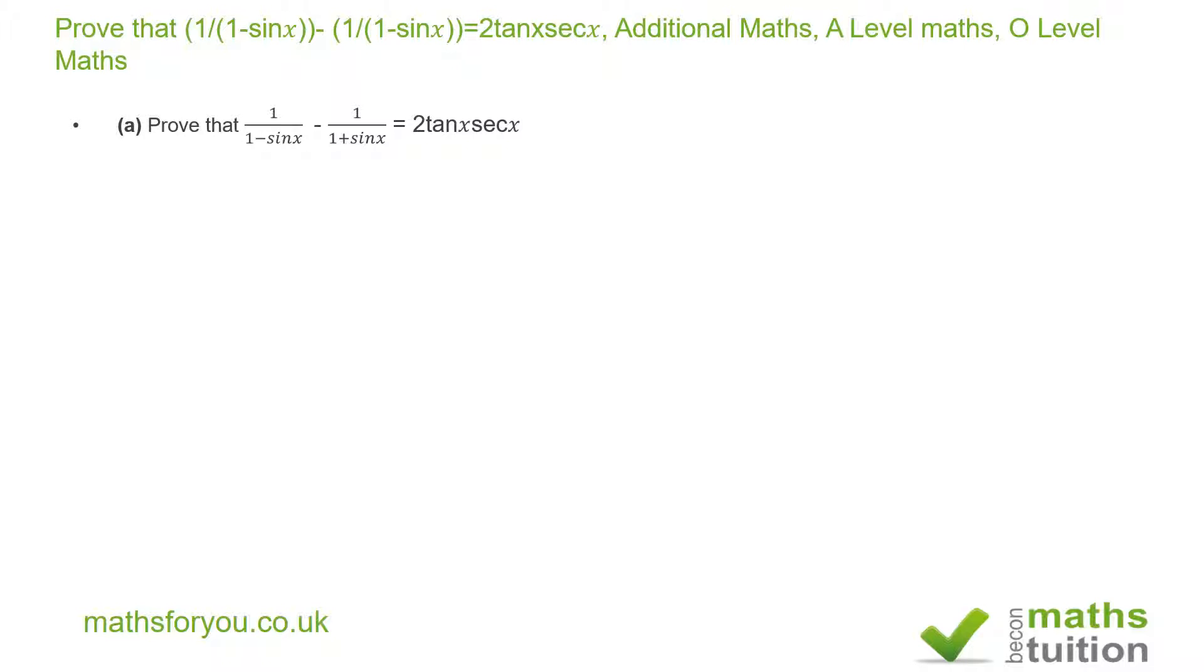And for part b, it says an acute angle x is such that x sin x is equal to p. Given that sin 2x is equal to 2 sin x cos x, find an expression in terms of p for cosec 2x.